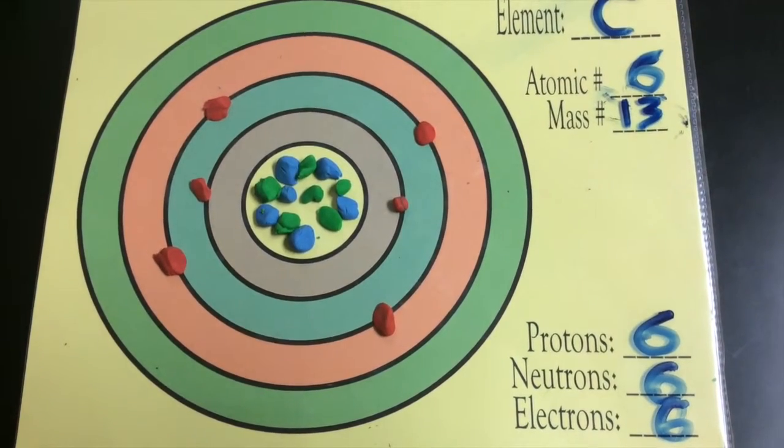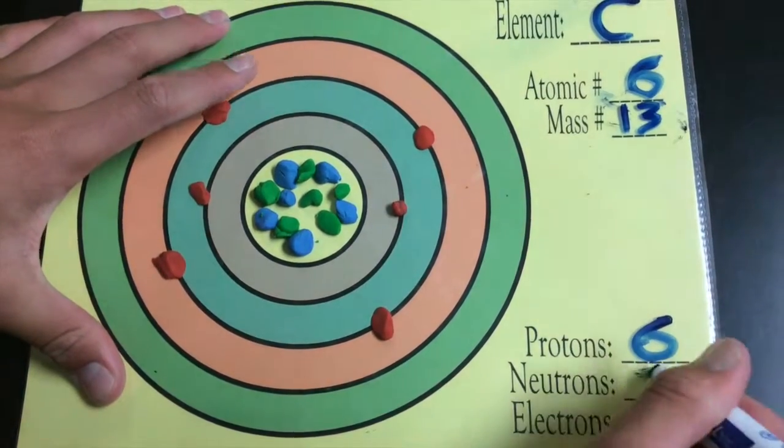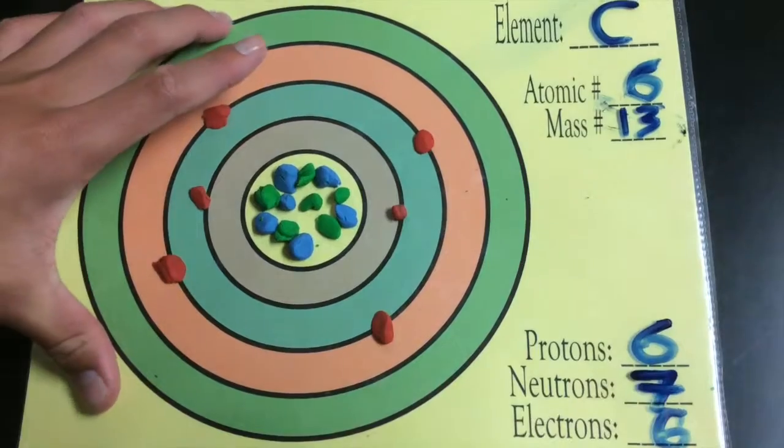Carbon-13, of course, has one more neutron, so it has a mass of 13 to 12.